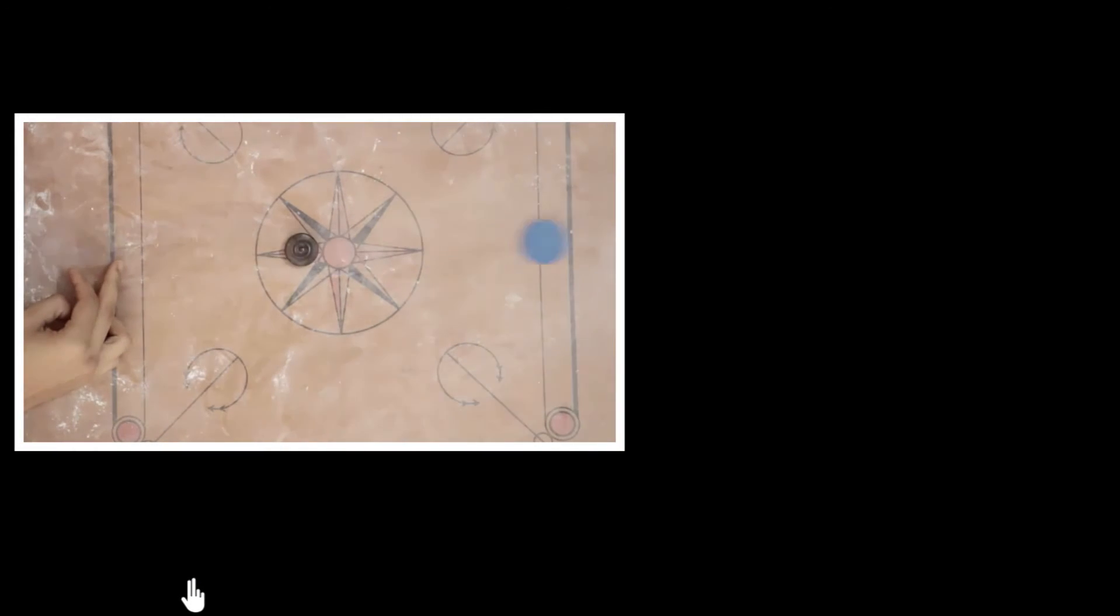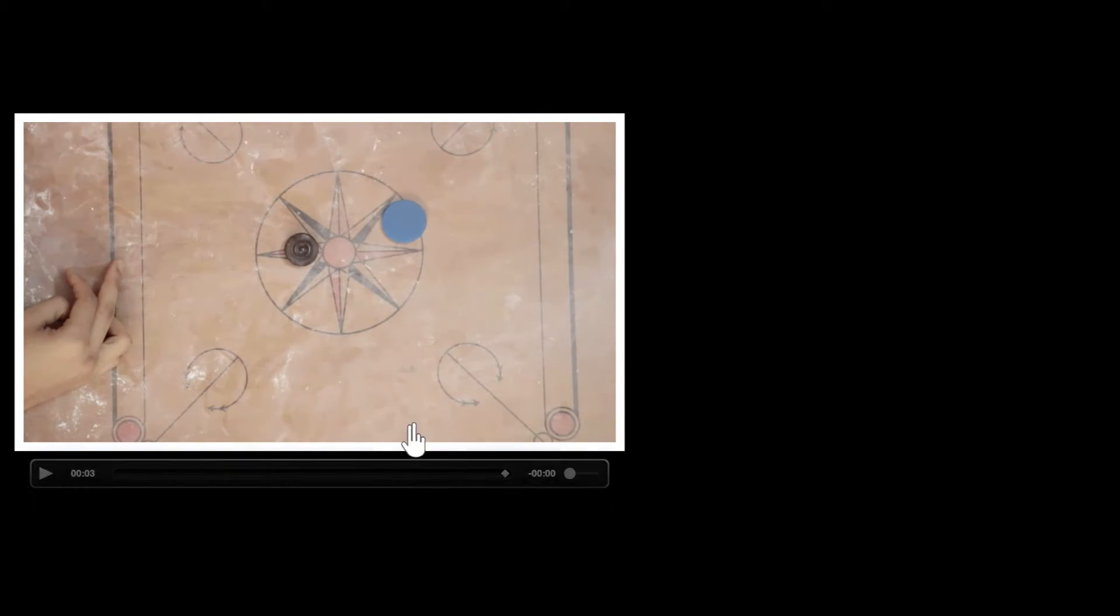Check out this carom shot. We see that the black coin goes, so here is it, if you look at it again, black coin goes and hits the blue coin. Now imagine we knew the speed at which the black coin is coming and hitting the blue coin. The question is, can we predict with what speed the blue coin takes off?